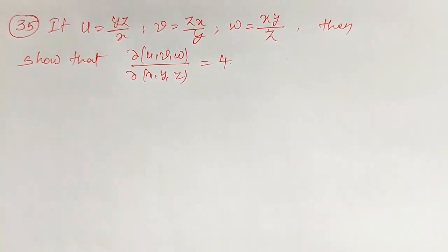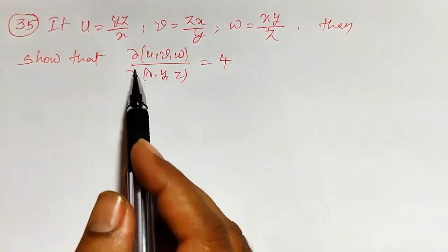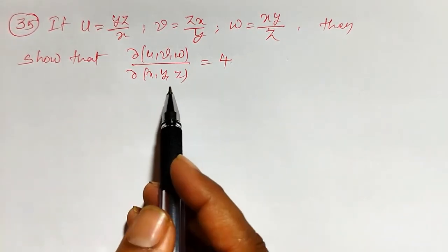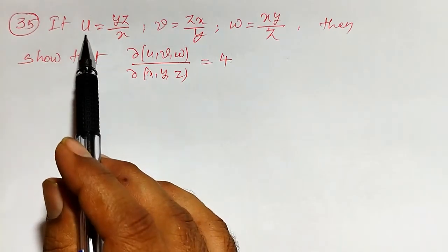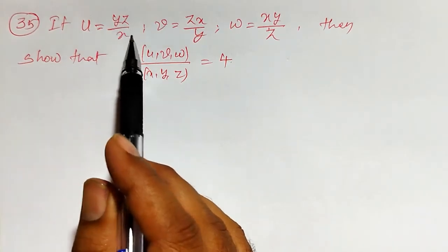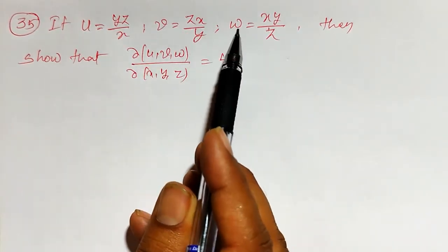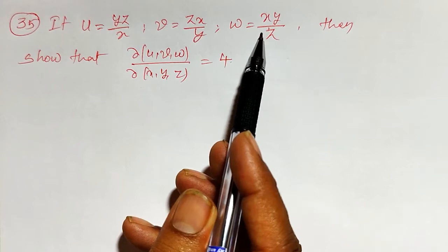Welcome friends. In this video, I am going to solve an example on the Jacobian of u, v, w with respect to x, y, z. Here, u is defined as a function of x, y, z; v is also a function of x, y, z; and w is also a function of x, y, z.